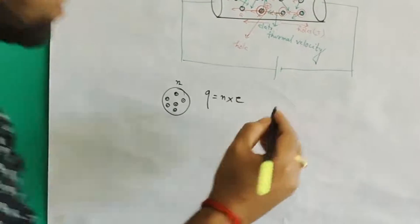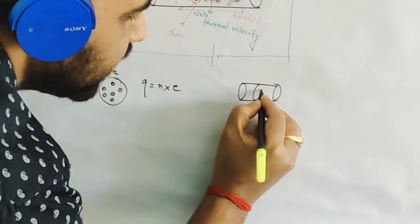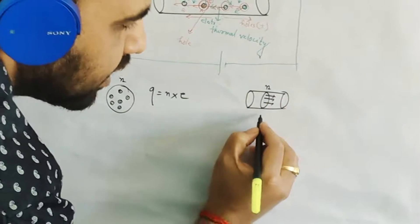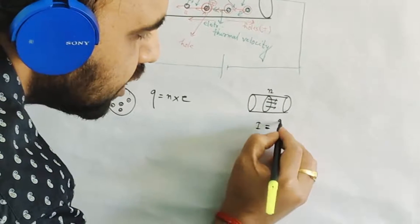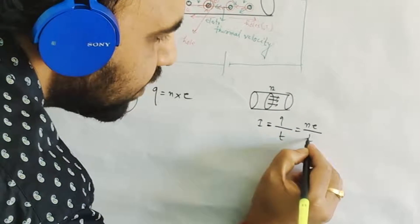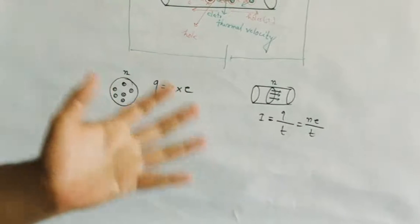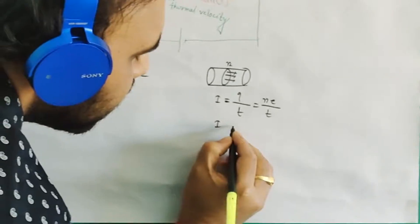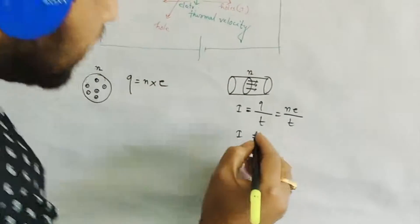If we consider a wire through which n number of charges is flowing, then current flowing in that time will be Q/t or n×e/t. In higher class, in class 12, you will know about another type of equation based on drift velocity: I = neAvd.